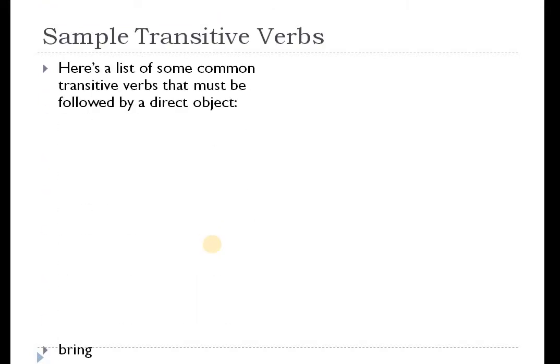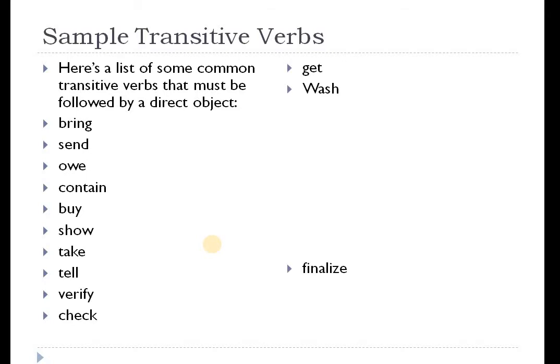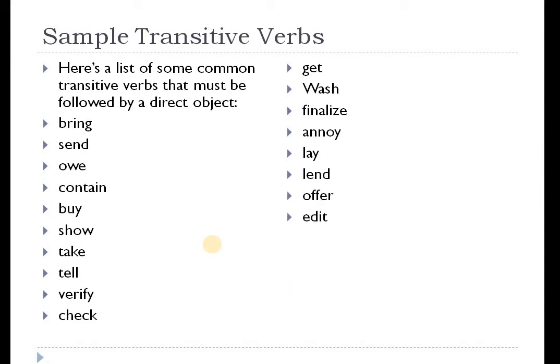Some sample transitive verbs: bring, send, owe, contain, buy, show, take, tell, verify, check, get, wash, finalize, annoy, lay, blend, offer, edit, make, phone. All of these are transitive verbs. If you can make a sentence using any of these transitive verbs followed by a direct object, that will be great. And if you have any other additions, please comment below.